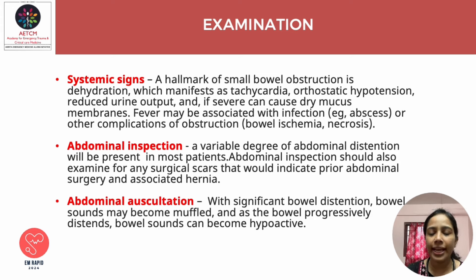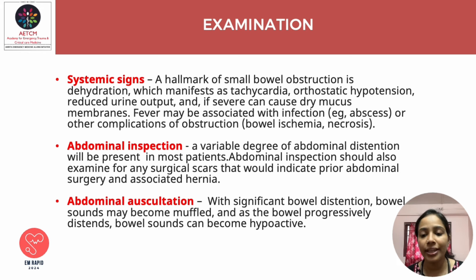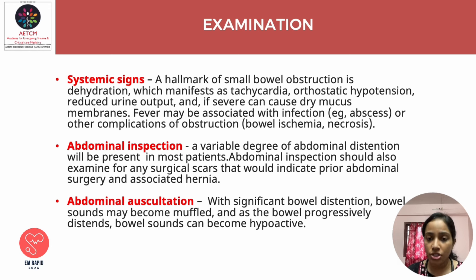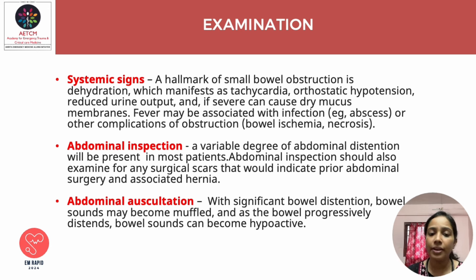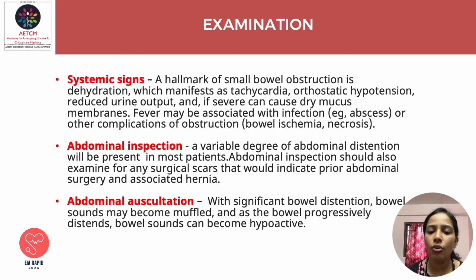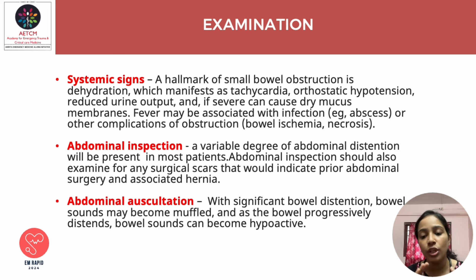On examination of a patient with suspected intestinal obstruction, look for systemic signs of dehydration such as tachycardia, orthostatic hypotension, reduced urine output, and dry mucous membranes. If the patient has developed complications, fever may be present, suggesting bowel ischemia or necrosis. On inspection, a variable degree of abdominal distension will be present; always examine for surgical scars indicating prior abdominal surgery and look for hernias.